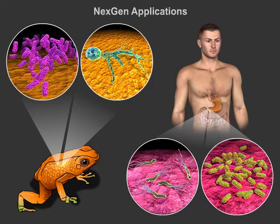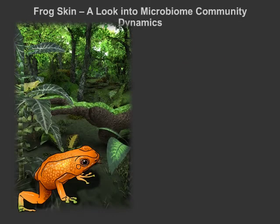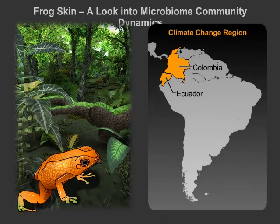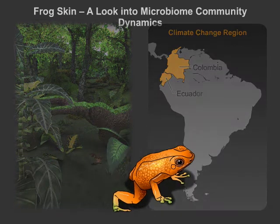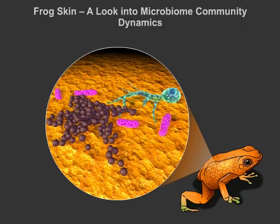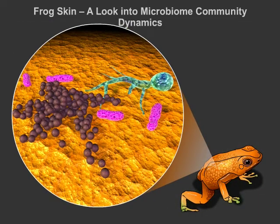With the O'Connell Lab, I studied the Diablita poison dart frog in the rainforest of northern Ecuador. Since these frog skin microbiomes are particularly sensitive to environmental changes, studying them can give valuable insight into the rapid climate change occurring in this area.